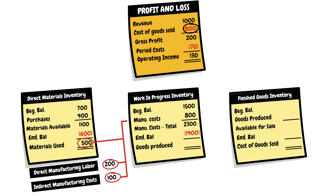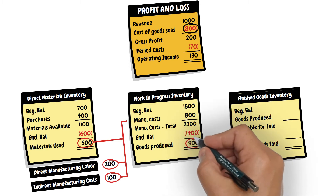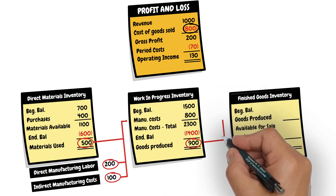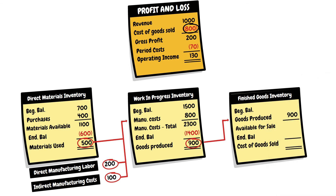Therefore, the cost of goods produced during the year is 900, which is also booked here in the inventory of finished goods account. There is a beginning balance for finished goods that were produced during the previous year but not sold yet, with a cost of 600.